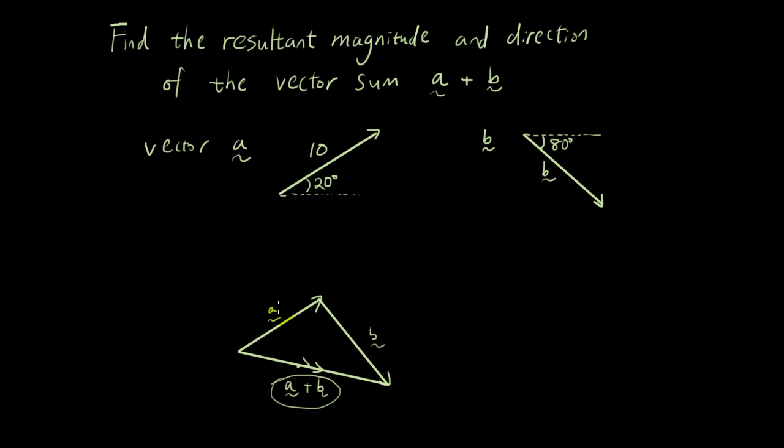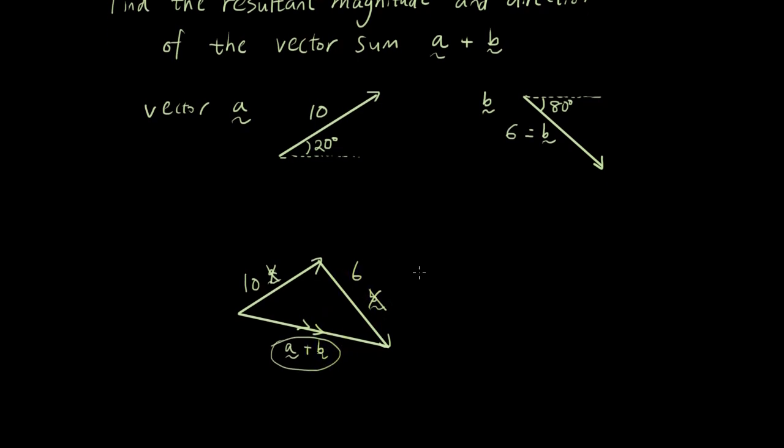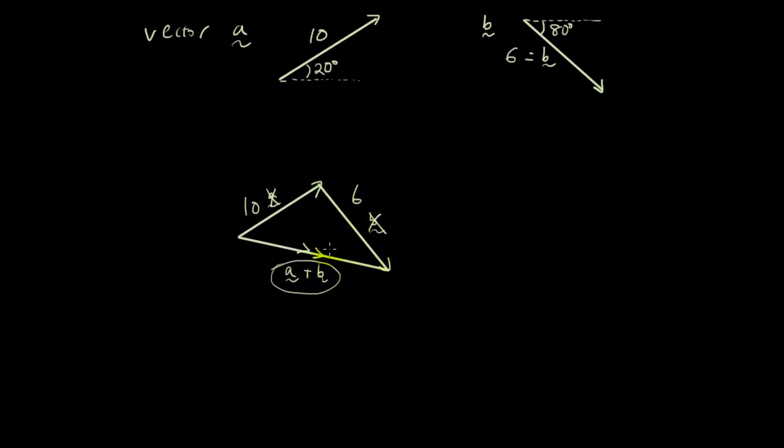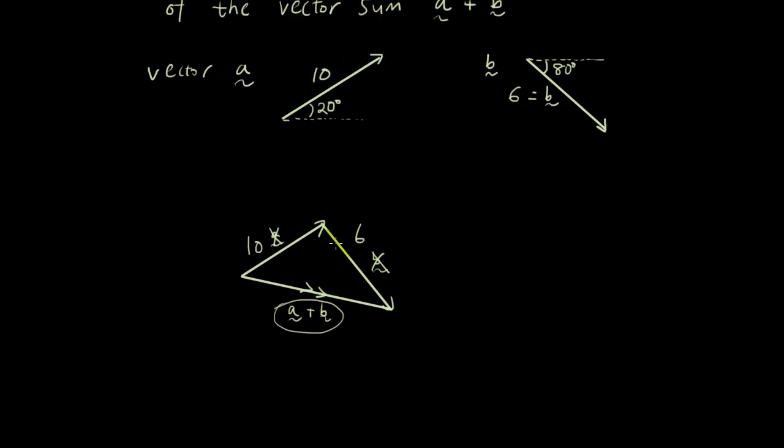I know that vector A is 10 units long. So this line here, I can represent that as 10 instead of saying A. This line here, vector B, I haven't said how long that is. So let's just say that is 6 units long. So I can just replace that with 6 units. And what do I know about the angles? What do I know about the angles?